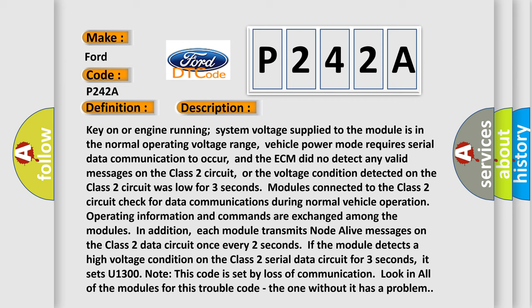Modules connected to the Class 2 circuit check for data communications during normal vehicle operation. Operating information and commands are exchanged among the modules. In addition, each module transmits node alive messages on the Class 2 data circuit once every two seconds. If the module detects a high voltage condition on the Class 2 serial data circuit for three seconds, it sets U1300. Note: this code is set by loss of communication. Look in all of the modules for this trouble code; the one without it has a problem.